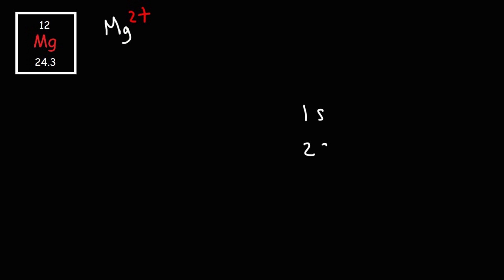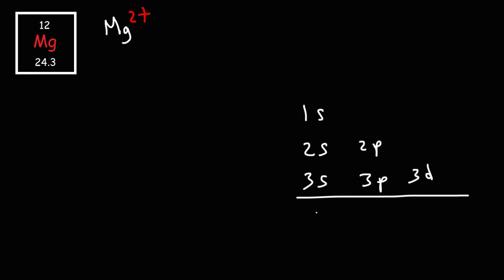Let's begin by writing down the sublevels: 1s, 2s, 3s, 2p, 3p, and 3d. The s sublevel can hold up to 2 electrons, p can hold up to 6, and d can hold up to 10 electrons. We're going to write the configuration until the exponents add up to the atomic number of Mg.